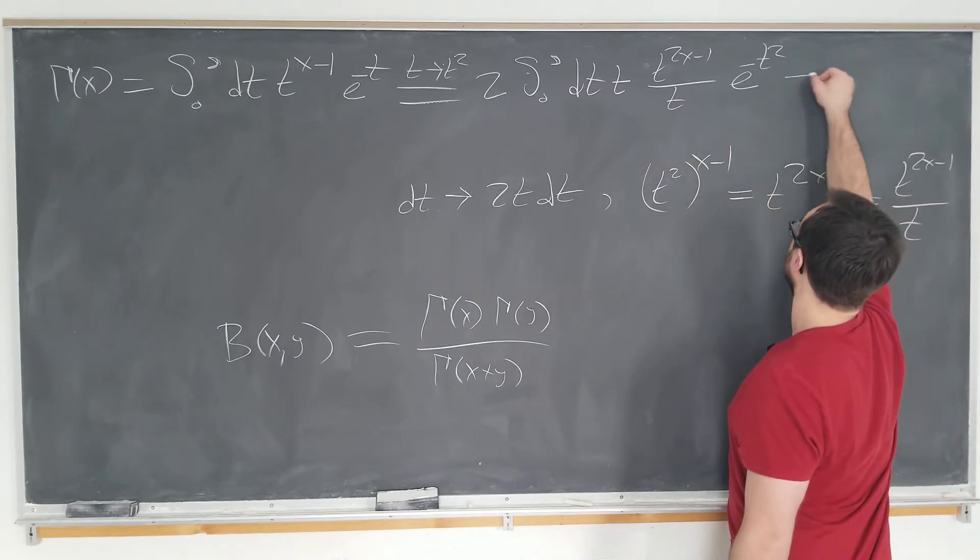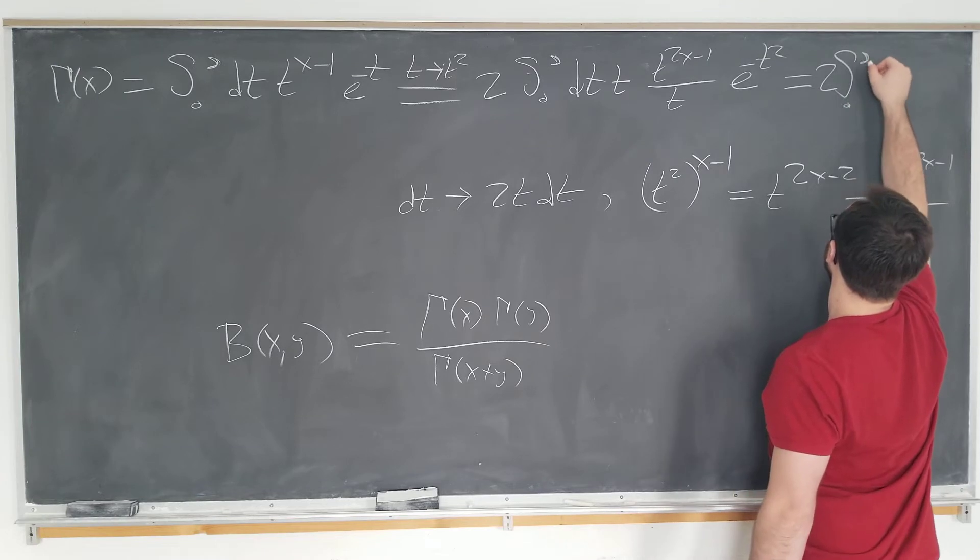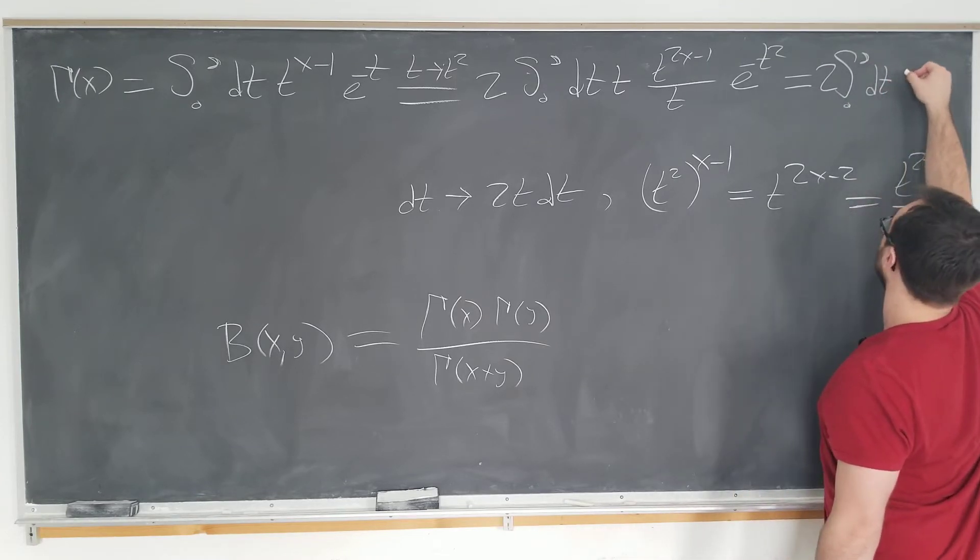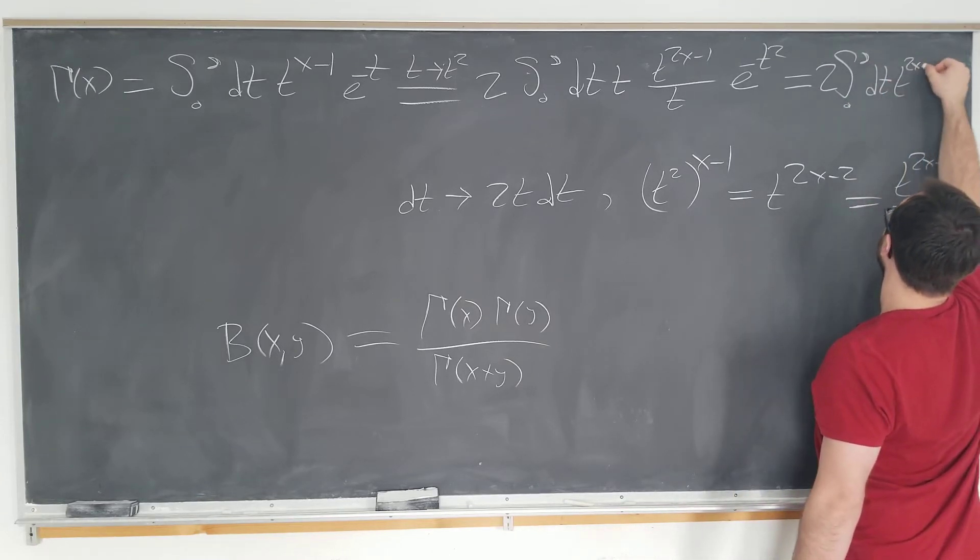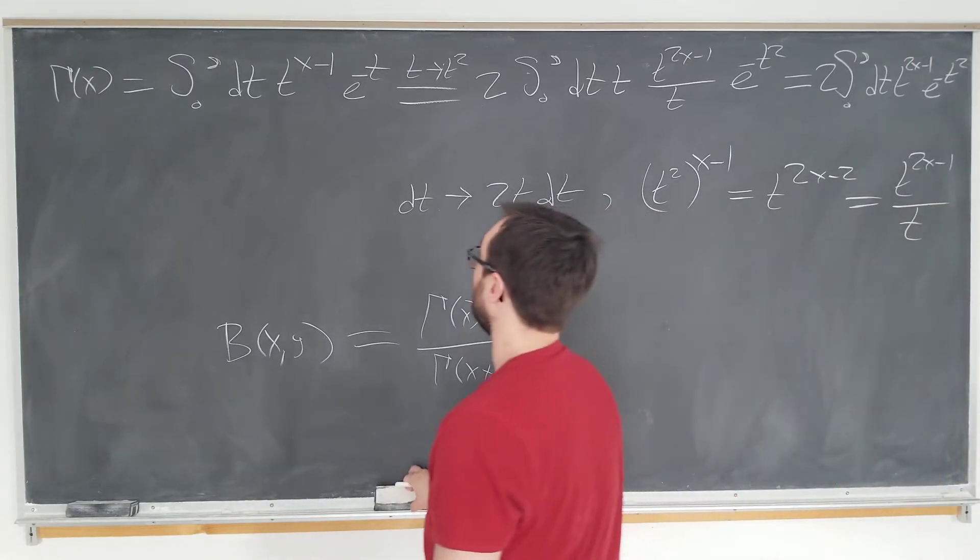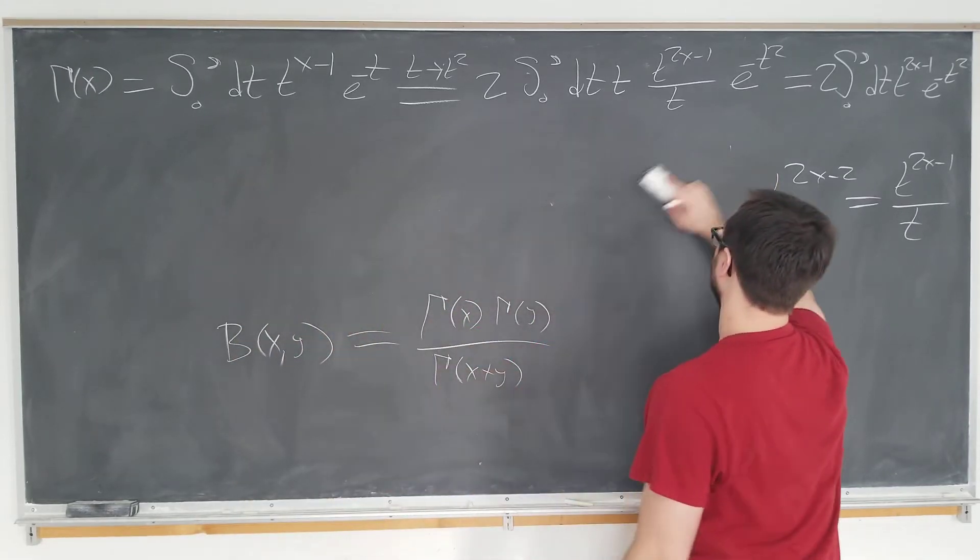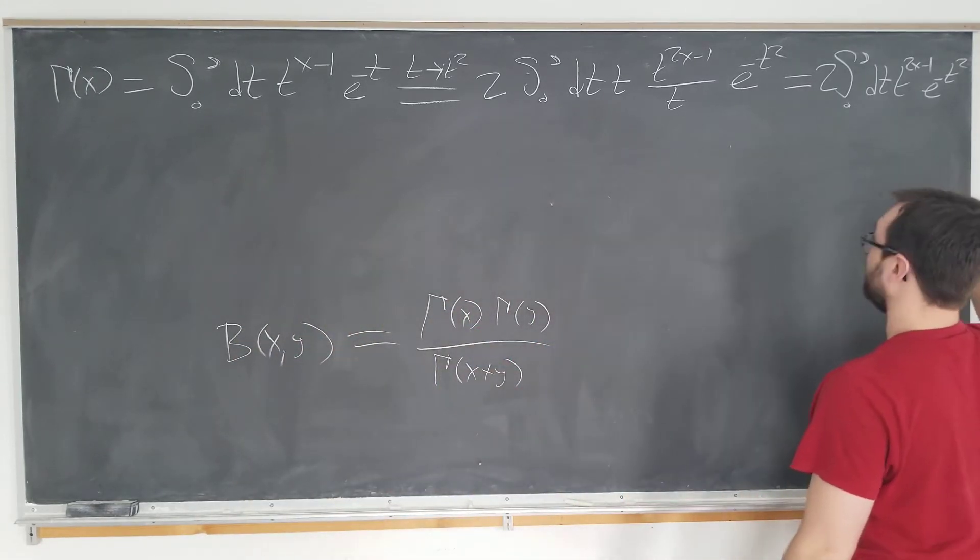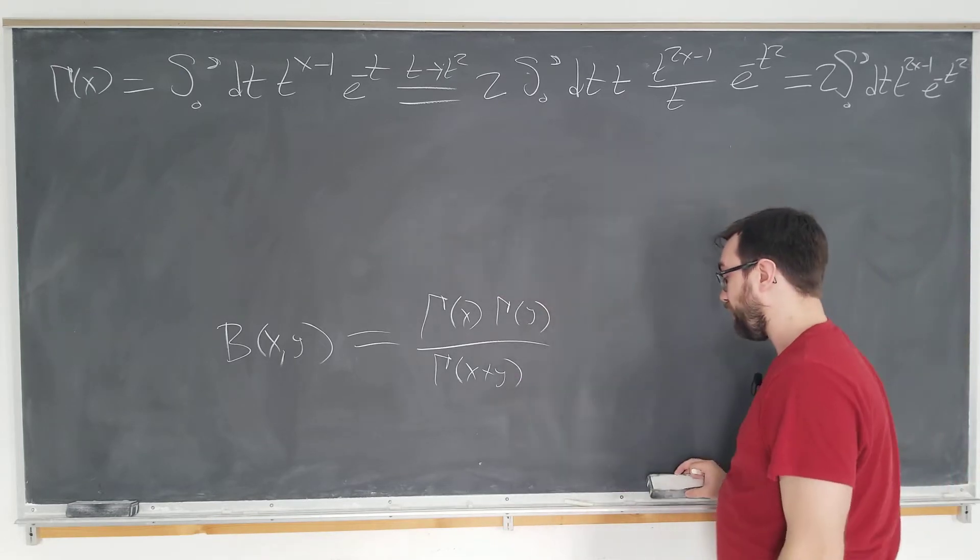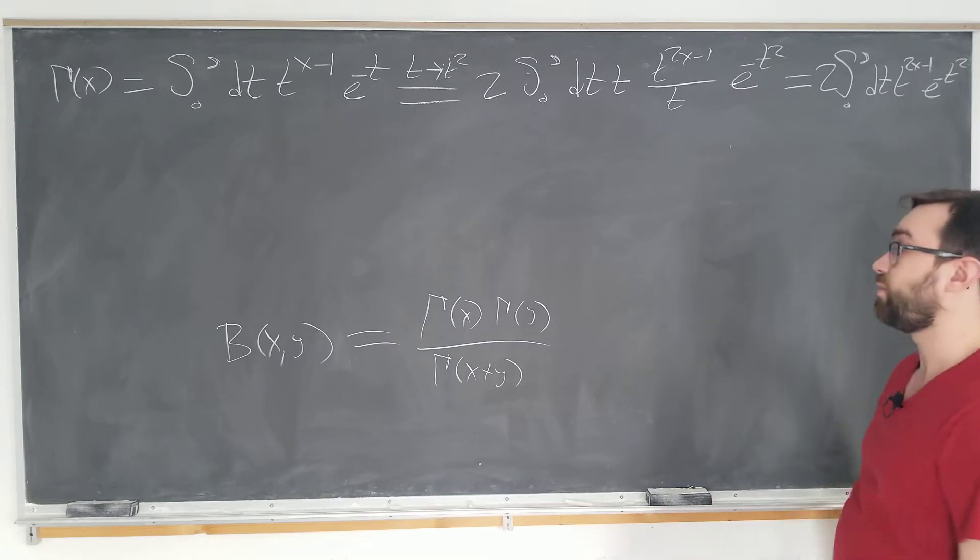Have these t's canceling out, just becomes twice integral from zero to infinity, dt, t to the 2x minus 1, e to the minus t squared. So, note that we had originally an integer or arbitrary power of t multiplied by an exponential.